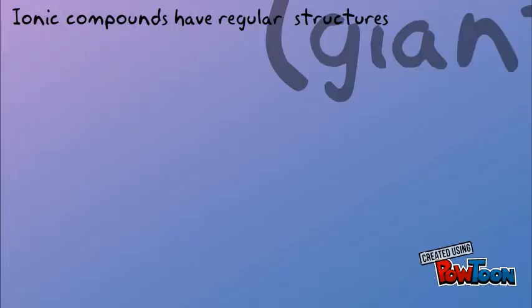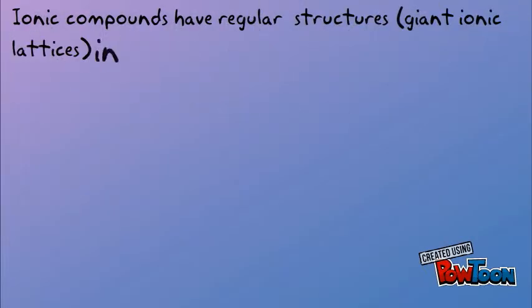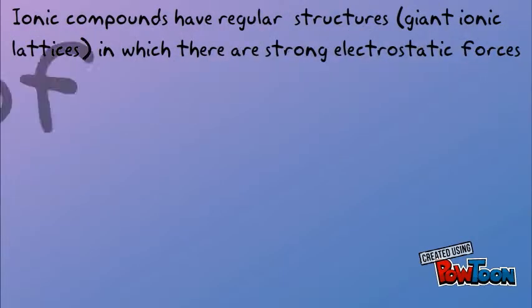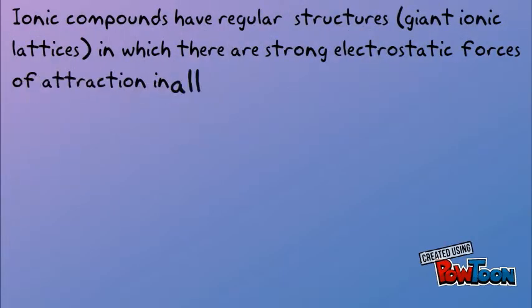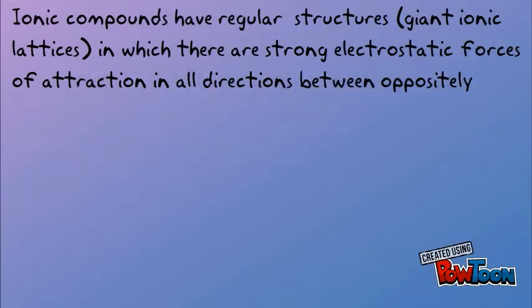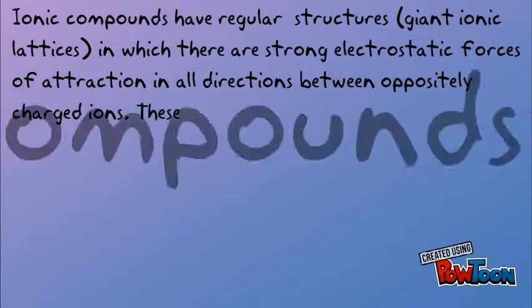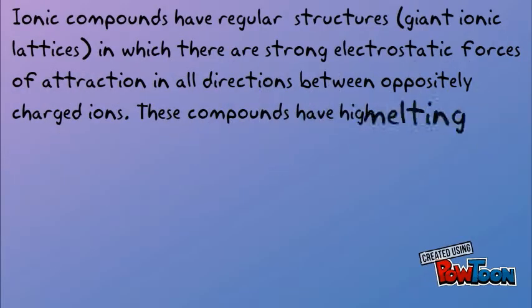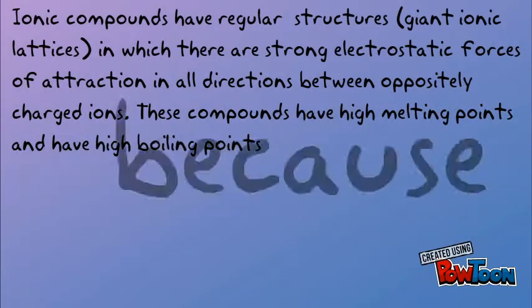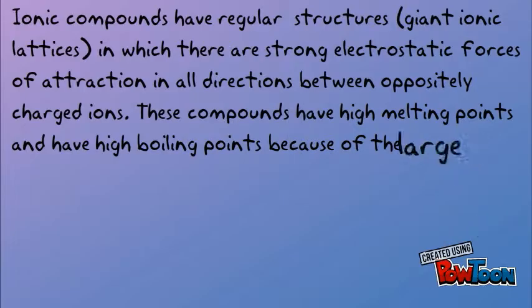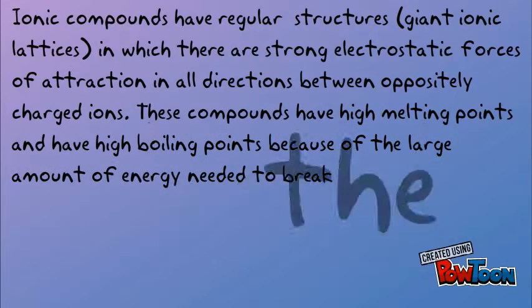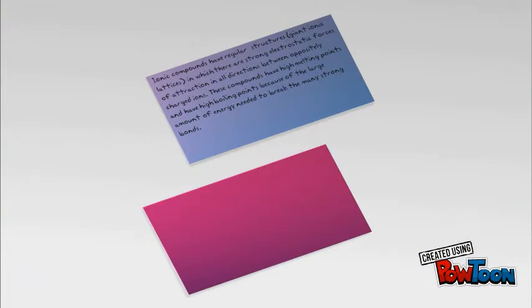Ionic compounds have regular structures — giant ionic lattices — in which there are strong electrostatic forces in all directions between oppositely charged ions. These compounds have high melting points and high boiling points because of the large amount of energy needed to break so many strong bonds.